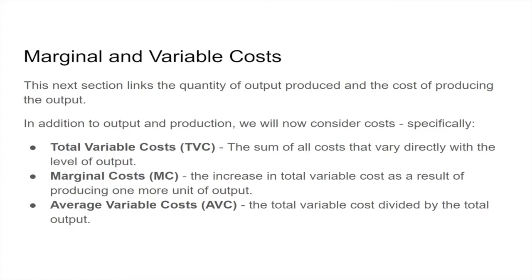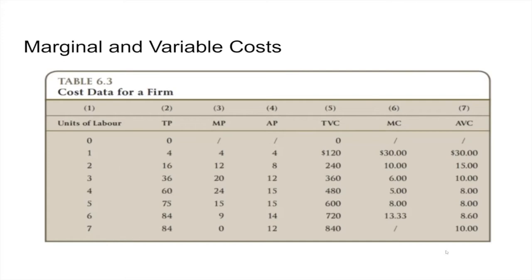The total variable cost is the sum of all variable costs — variable cost of one unit, two units, three units — and it varies directly with the number of output. Marginal cost is the increase in total variable cost as a result of making one more unit of output. That definition is important because this can be confusing when you calculate it. Average variable cost is total variable cost divided by total output.